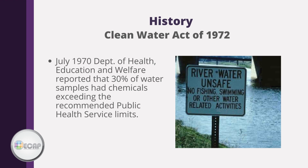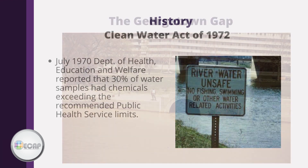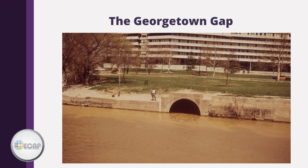In July of 1970, the Department of Health, Education, and Welfare reported that 30% of water samples had chemicals exceeding the recommended public health service limits. Here we see a picture of the Georgetown Gap, through which raw sewage flows into the Potomac. Sites like these were common in the early 70s.